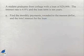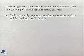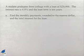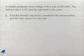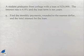Now let's look at a student loan. A student graduates from college with a loan of $20,000. The interest rate is 6.8% and the loan term is 10 years.